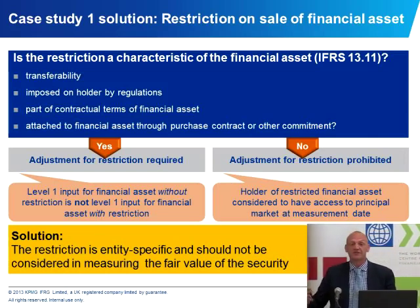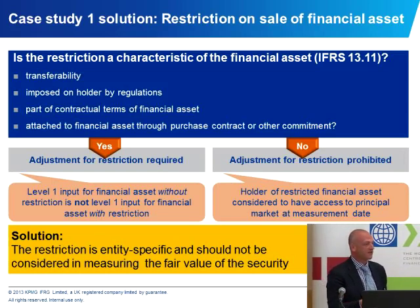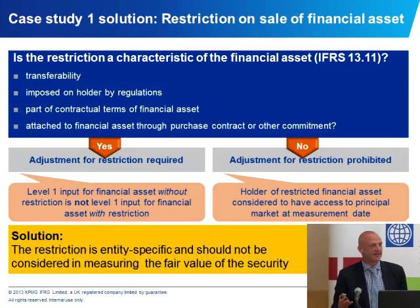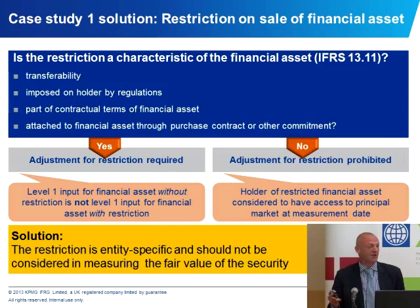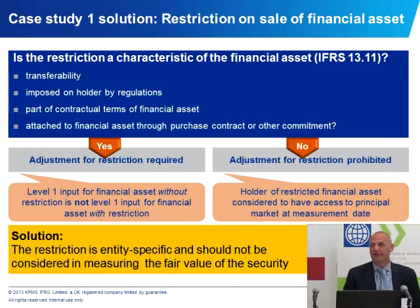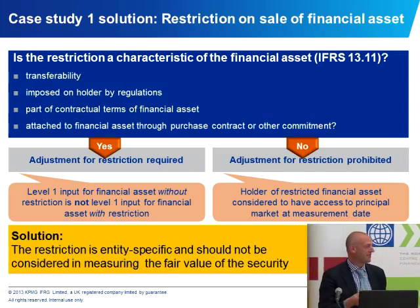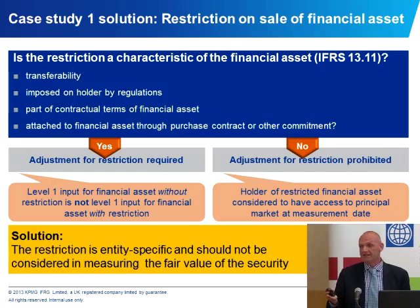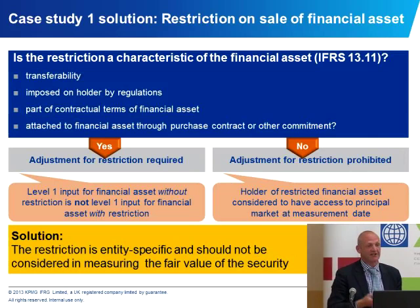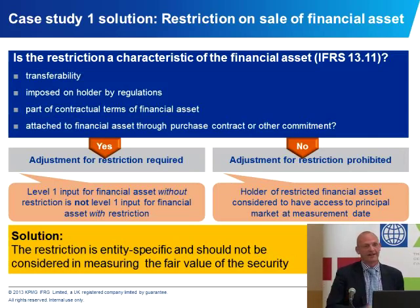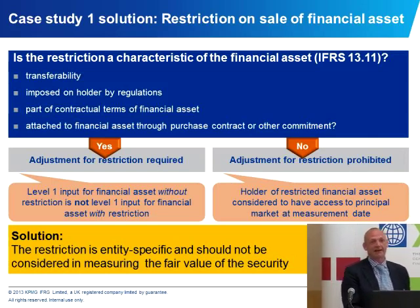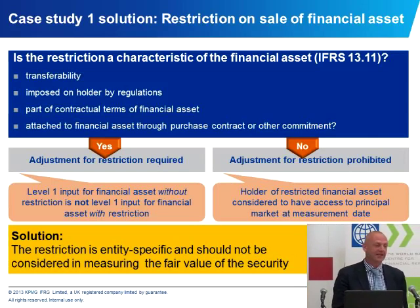In this case, a particular entity can't sell its particular shares — that's a feature of the entity, not a feature of the shares. If a third party acquired these shares, they would be unrestricted. You've got to analyse the facts and circumstances: is the restriction a feature of the thing you're valuing, or just a feature of the entity that happens to hold the asset today? Consider whether the restriction would transfer to a third party, whether it's part of the contractual terms of the instrument, or something imposed by regulations.